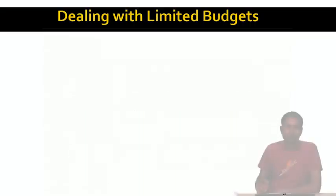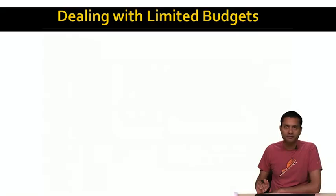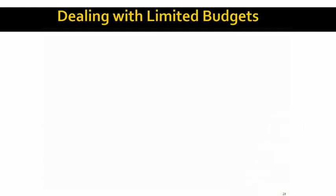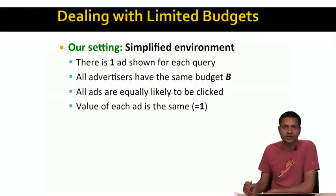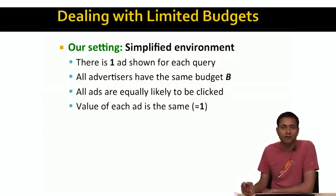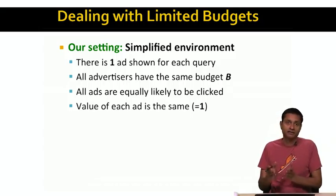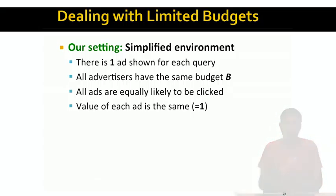So the question is how do we deal with the issue of limited advertiser budget — that we cannot show an ad from an advertiser whose budget has been exhausted. Now let's study the problem in a simplified version. The simplified version has only one ad shown for each query, and all advertisers have the same budget B. We're also going to assume that all ads are equally likely to be clicked and all have the same value of one — that is, the expected revenue from each ad, which is a product of the click-through rate and the bid, is equal to one.